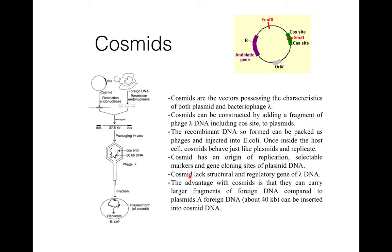A cosmid has an origin of replication, selectable markers, and gene cloning sites of plasmid DNA, but cosmids lack the structural and regulatory genes of lambda DNA. The advantage of using cosmids is that they can carry large fragments of foreign DNA compared to plasmids — about 14 kb of foreign DNA can be inserted into cosmid DNA.